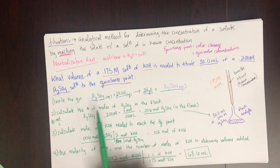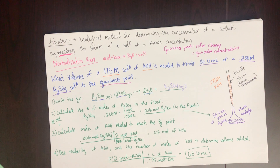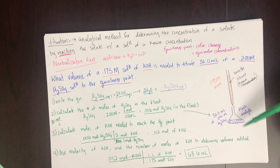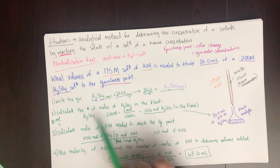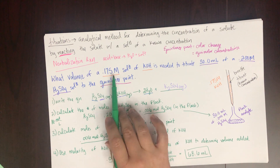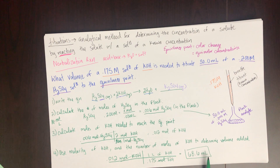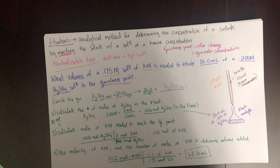This differs from a simple neutralization problem because of the 2-to-1 base-to-acid ratio from the diprotic acid. Remember: at the equivalence point there must be equimolar amounts reacting per the stoichiometry. All given values have three significant figures, so the answer should as well — 68.6 milliliters, or equivalently 0.0686 liters.